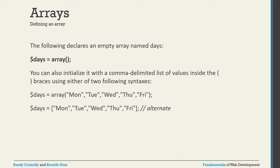Alternatively, you can initialize an array using square bracket notation. Instead of writing array() with parentheses, write dollar-sign days equals square brackets, then put values inside double quotes separated by commas. This is the alternative shorthand way to initialize an array.